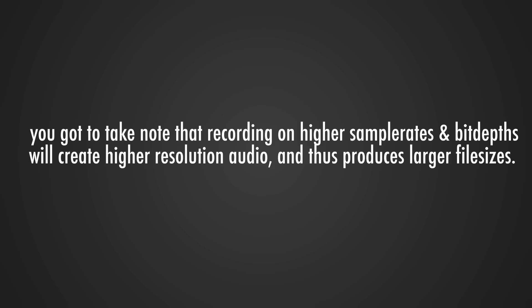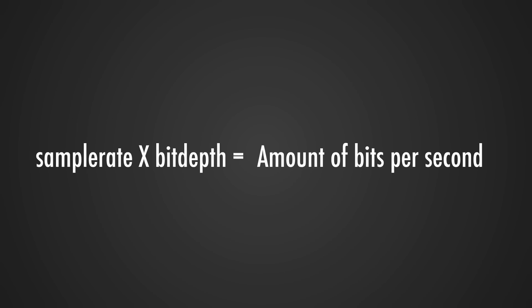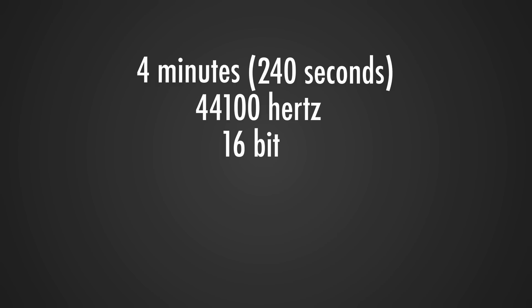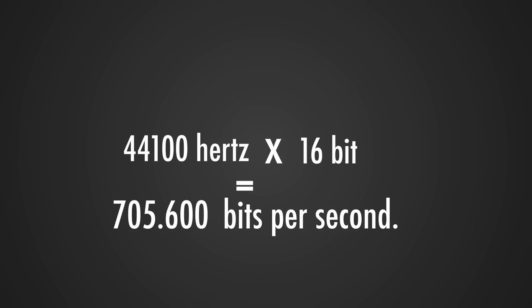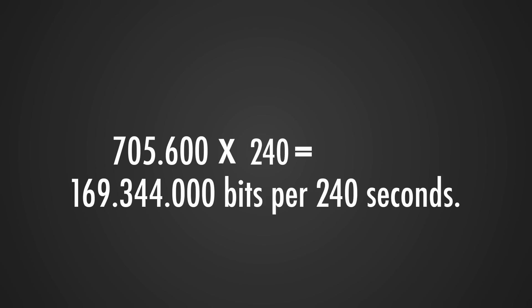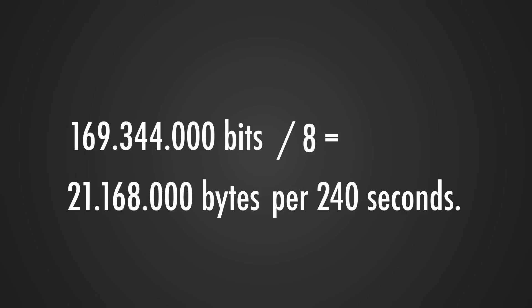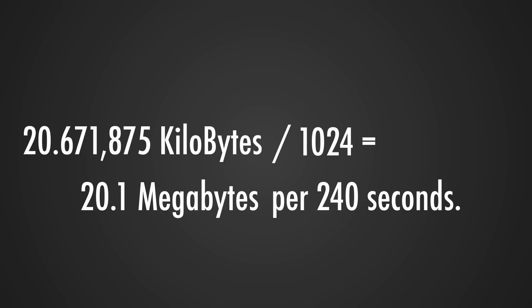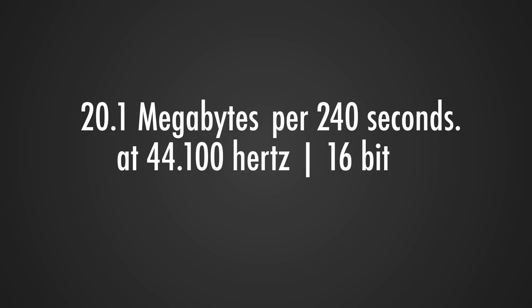Recording at higher sample rates and bit depths creates larger audio files. We can calculate the approximate disk space needed: take the sample rate times the bit depth to get bits per second, then multiply by the length of the song in seconds to get total bits. For a 4-minute song (240 seconds): 44,100 × 16 bits = 705,600 bits per second. Multiply by 240, then divide by 8 for bytes, divide by 1,024 for kilobytes, and divide by 1,024 again for megabytes. This results in approximately 10.1 MB per channel — so about 20.1 MB for four minutes of digital audio at 16-bit / 44.1 kHz.